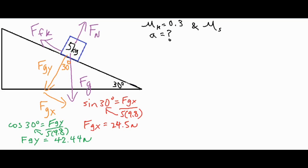Using trig to find the two components: sine of 30 degrees gives us fgx, which is the opposite side of the 30 degree angle, and the hypotenuse is fg which is mg — that's five times 9.8. Cross-multiplying gives 49 times sine of 30, which equals 24.5 newtons for fgx. Similarly, cosine of 30 equals fgy over 49 newtons, giving us 42.44 newtons for fgy.